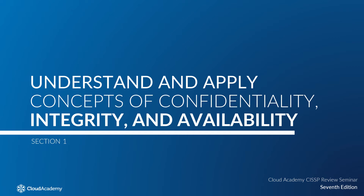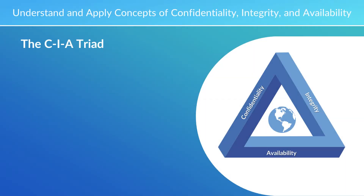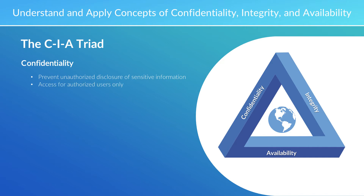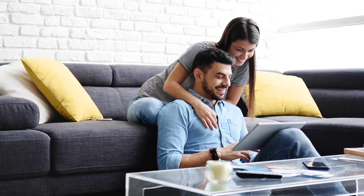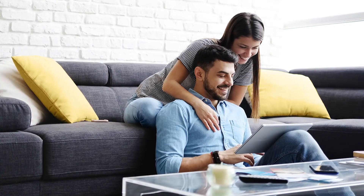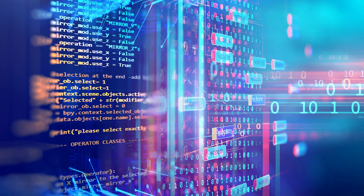This will be the very first module within Domain 1, where we're going to understand and apply the concepts of confidentiality, integrity, and availability. Here we have the much-discussed historic CIA triad — our three bars of our own iron triangle. Confidentiality refers to prevention of unauthorized disclosure of sensitive information. Sensitive information means what is sensitive to the organization, and it includes access for authorized users only. Confidentiality covers things of a privacy nature referencing individuals, or company-oriented information like trade secrets.